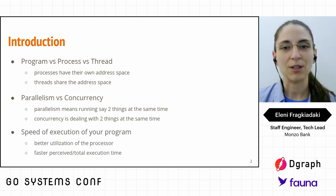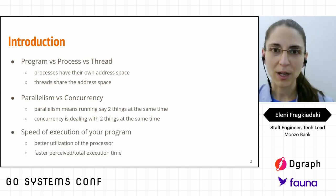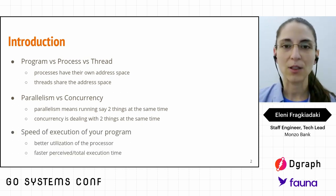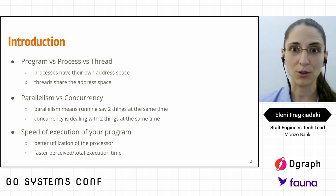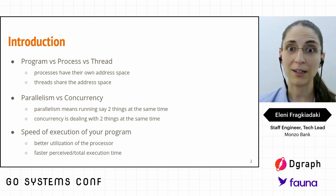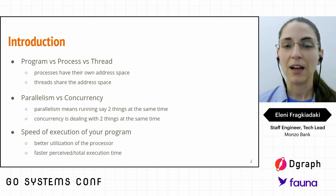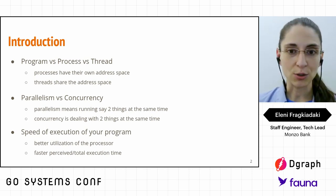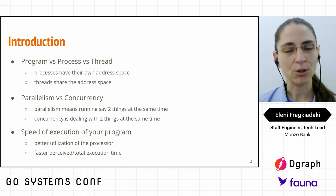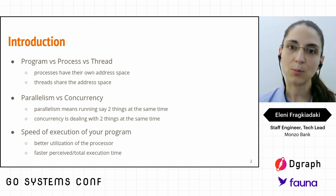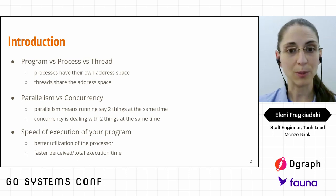Why would you be interested in concurrency and parallelism? The main reason is that it helps us utilize our processing power a lot better. It also allows us to reduce by a lot the execution time of our program and it reduces the perceived time it takes for our program to complete.